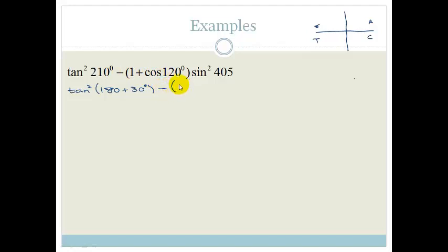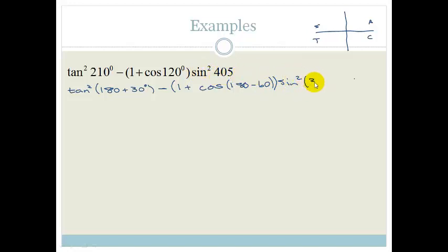Minus bracket 1 plus cos, and 120 can be rewritten as 180 minus 60. And then we've got sin squared, and this can be rewritten as 360 plus 45.